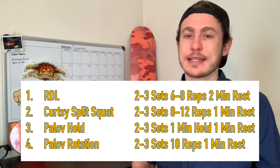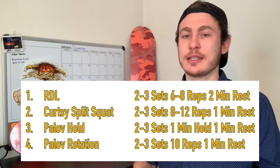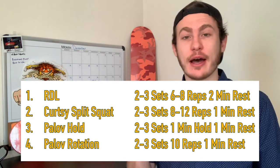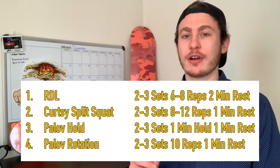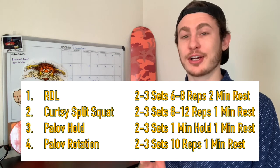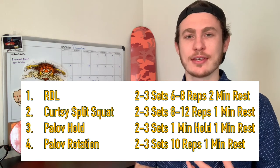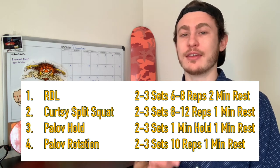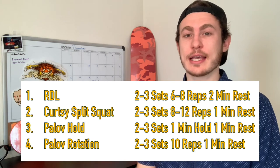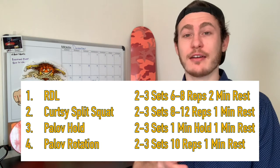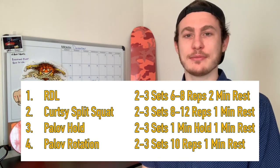Now let's do a quick review. Start with two to three sets of Romanian deadlifts, six to eight reps with a minute of rest in between. Then progress to the curtsy stance split squat for two to three sets with eight to twelve reps and one minute rest. After that, train your anti-rotation and rotational muscles — start with two to three sets of the pallof hold for one minute on each side with a minute of rest in between. Use all four sections to create a well-balanced skateboarding workout.